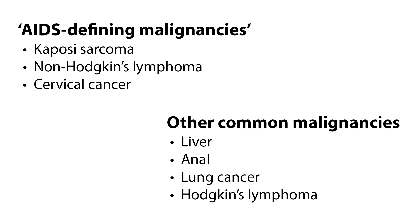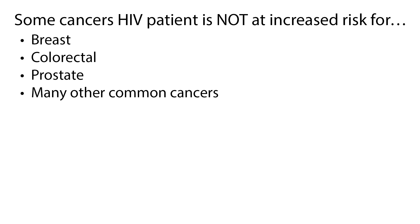Patients with HIV infection have a much higher risk of acquiring certain types of cancer. There are three cancers known as AIDS-defining malignancies, which mark the point at which HIV has progressed to AIDS: Kaposi's sarcoma, non-Hodgkin's lymphoma, and cervical cancer. Other common malignancies include liver, anal, and lung cancer, and Hodgkin's lymphoma. There are some cancers the HIV patient is not at increased risk for, including breast, colorectal, prostate, and many other common cancers, and general screening guidelines should be followed.